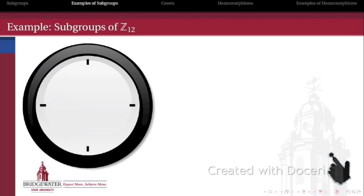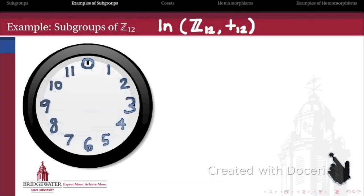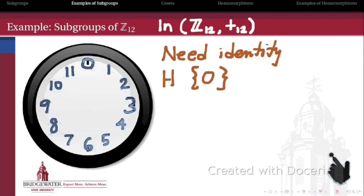Here's an example. Let's take the familiar clock face group, the additive group of integers modulo 12, with numbers arranged around a clock face. Let's think about what a subgroup might look like. Every subgroup must contain an identity element, which must be the same as the identity of the original group — in this case, 0. If that's all it has, we call it the trivial subgroup.